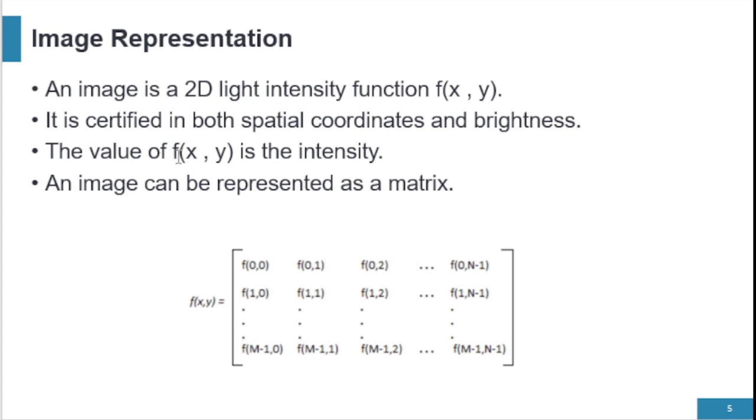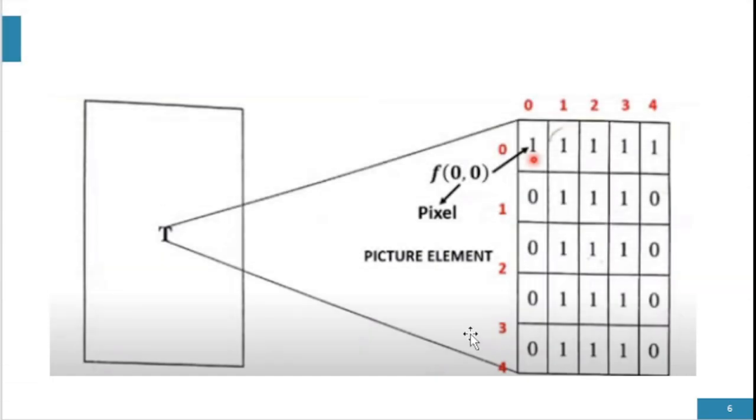An image can be represented in the form of a matrix. Here we have a matrix whose values start from (0,0) for x and 0 for y, and it ends at (m-1) and (n-1). This picture consists of two parts, part A and part B. Part A is a visual representation of an image in matrix form.